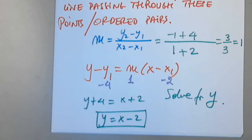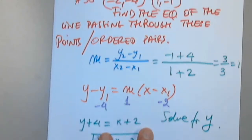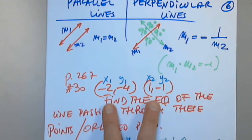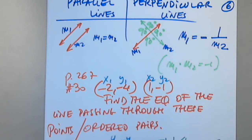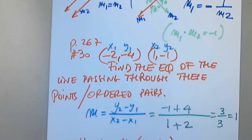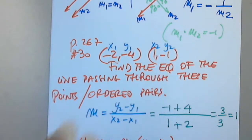What does this represent again? It's the equation of the line passing through those two points. Exactly. That's what it is — the equation of the line passing through the given points. Any questions?